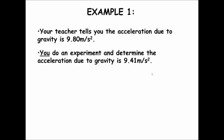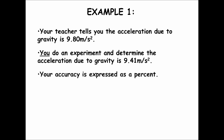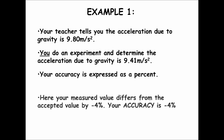Compare those two numbers: 9.80 meters per second squared, which is what your teacher told you, and 9.41 meters per second squared, which is what your experiment found. Your accuracy is expressed as a percent, and in this case your measured value differs from the accepted value by negative 4%.